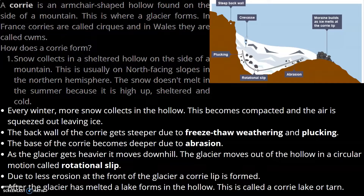So how does a corrie form? Snow collects in a sheltered hollow on the side of a mountain — usually on north-facing slopes in the northern hemisphere. The snow doesn't melt in summer because it's high up, sheltered and very cold. Every winter, more snow collects in the hollow, becomes compacted, and the air is squeezed out, leaving just ice. The back wall gets steeper due to freeze-thaw weathering and plucking, and the base becomes deeper due to abrasion. As the glacier gets heavier, it moves downhill in a circular motion called rotational slip. Due to less erosion at the front, a corrie lip is formed. After the glacier has melted, a lake forms in the hollow, called a corrie lake or a tarn.